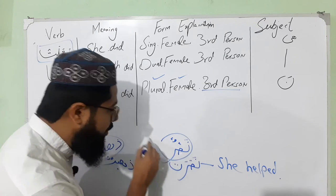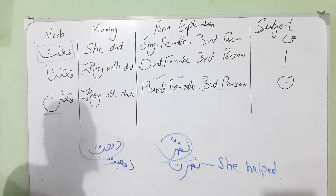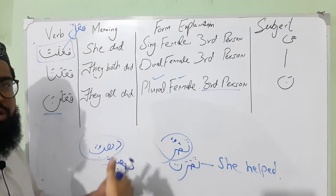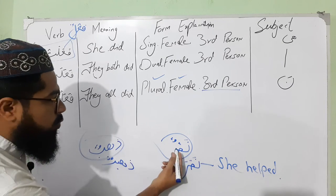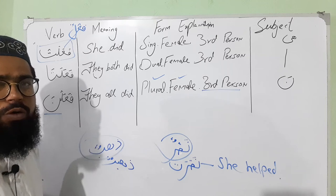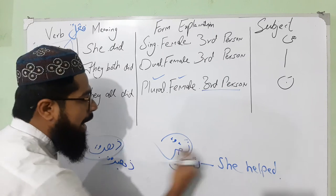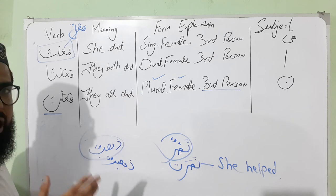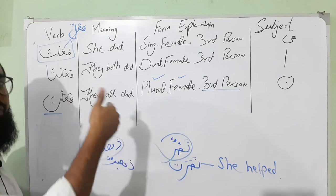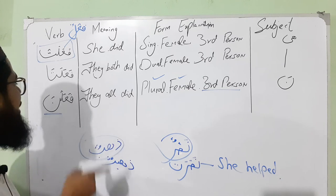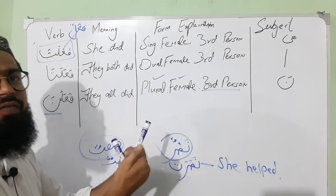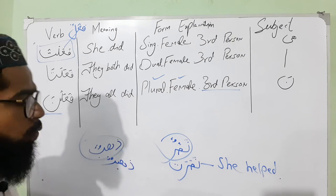The same applies to the root word 'nasrun,' which means 'to help somebody.' If you say 'nasarat' like faalat, it means 'she helped.' If you say 'nasrata' like faalata, it means 'they both helped' — and 'they' here refers to females.